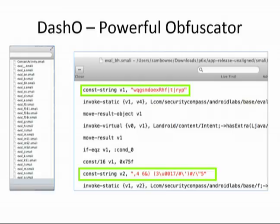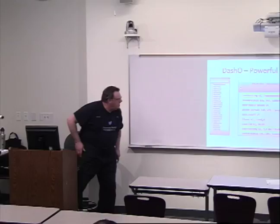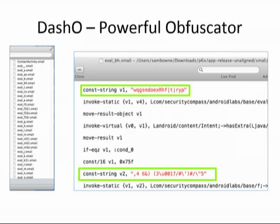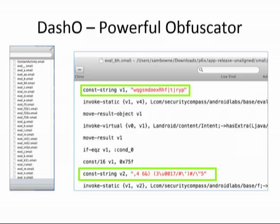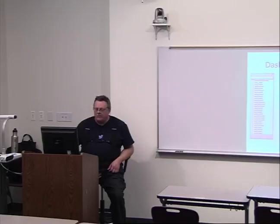DashO is one that only costs $2,000 and does have a free trial. It takes variables that used to say things like 'username' and 'password' and turns them into garbage, and it changes all the names of all the routines into garbage too. So now you've got a big job to find where the login method is and where the username and password are. Things that use ProGuard still have all the variable names and method names readable, so it's no problem. With DashO, even searching for words like 'password' and 'login' in the app yields nothing — everything is scrambled encrypted garbage.